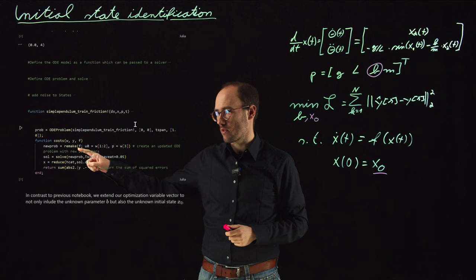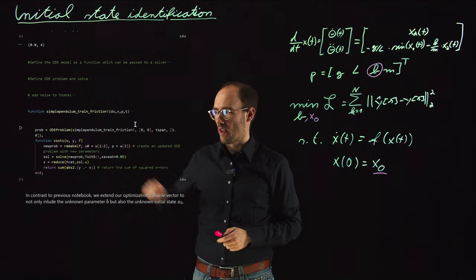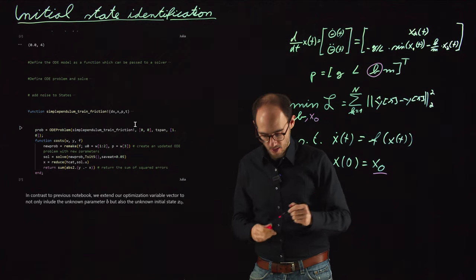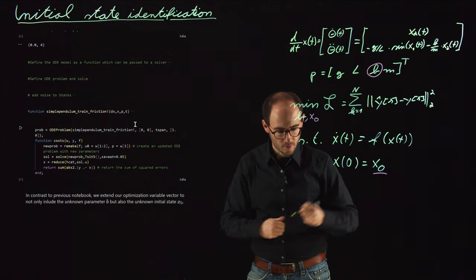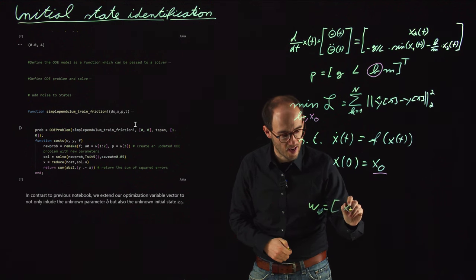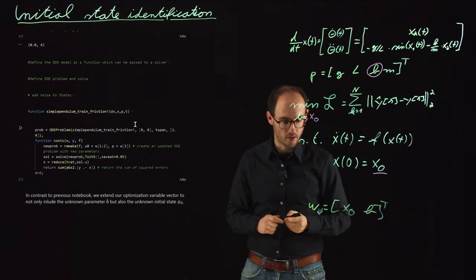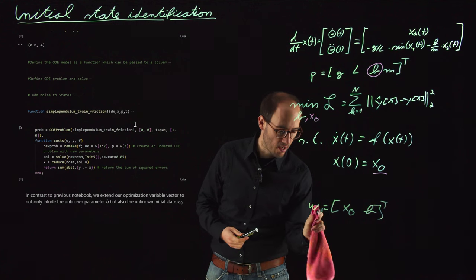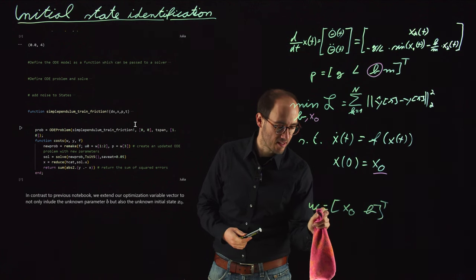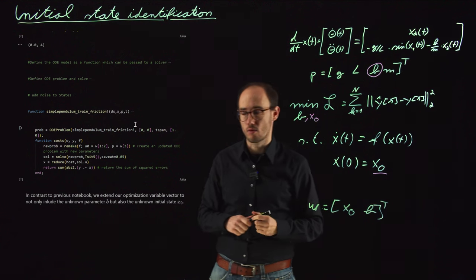What we basically just need to do is we need to extend this parameter vector w and what we do is we define w as the initial state x0 and the additional parameter b which we are not aware of. So we basically extend our parameter vector and add the initial state to that vector.